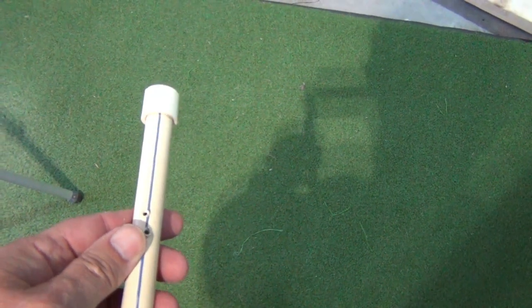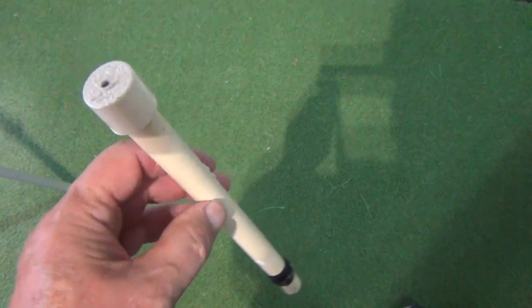For a mast mount, get a length of half inch PVC pipe and cement on an end cap. I'm using a piece that's 12 inches long.